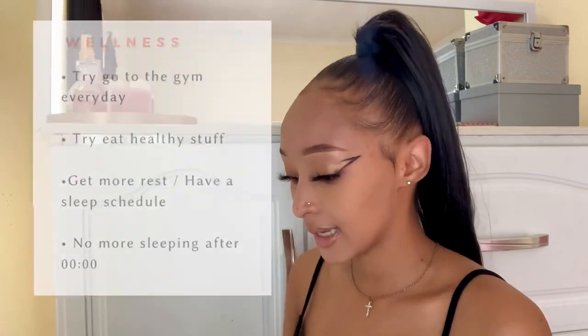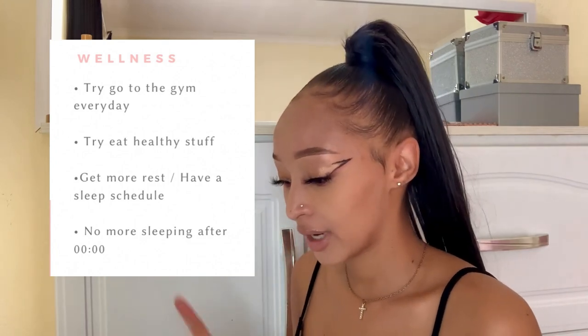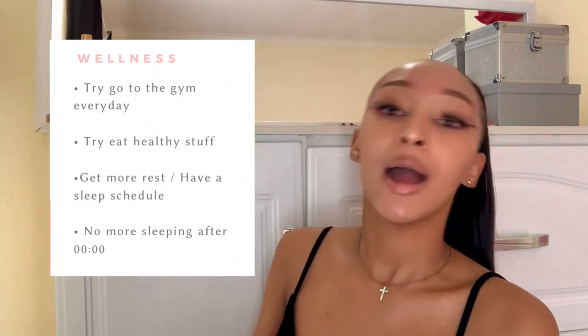Under wellness it says try to go to the gym three to four times a week, eat healthy, and get more rest with a sleep schedule. My sleep schedule is so off — I can literally fall asleep at 3 a.m. sometimes, and I'm not trying to do that every day. I want to go to sleep by 11 or 12 midnight because as a person you genuinely just need to rest. You can't always be tired 24/7. So no more sleeping after 12 midnight.